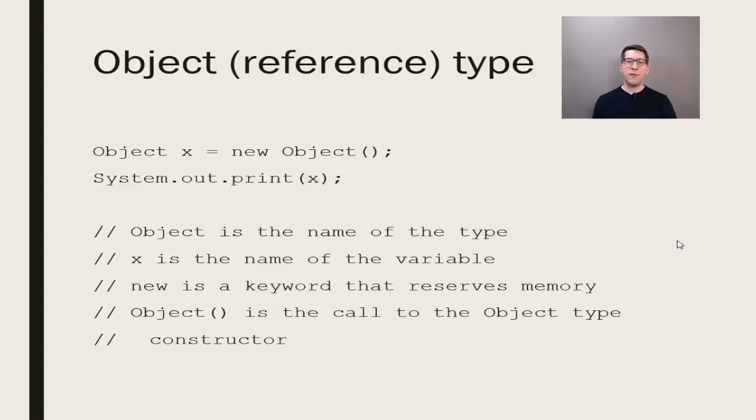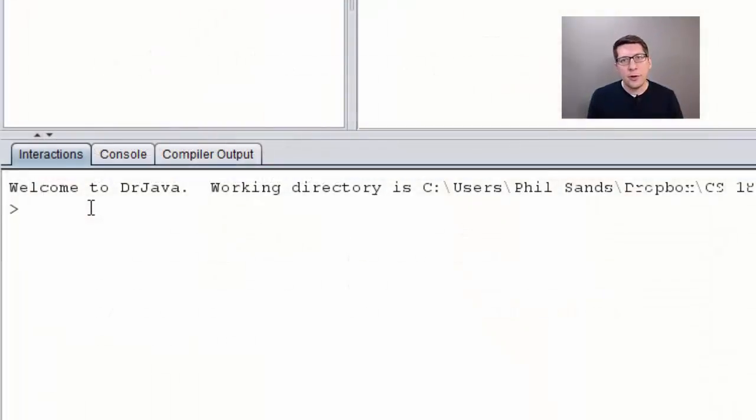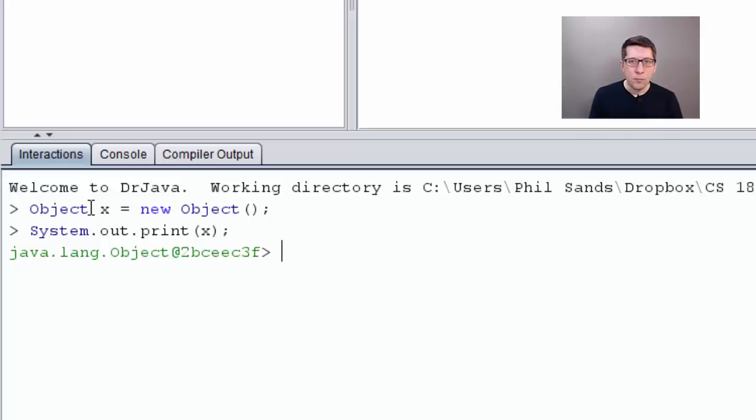This is very specific notation that we will revisit when we get to our discussion of objects and classes, so consider this a preview. When the new operator is used, the program instructs the machine to establish the requisite amount of memory, and then provides the location of this memory. Let's print out this variable.